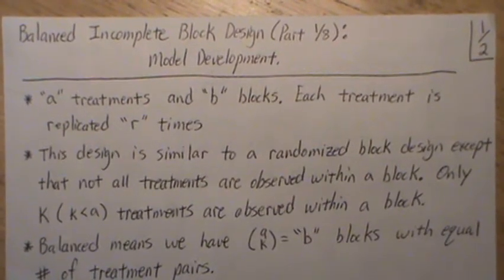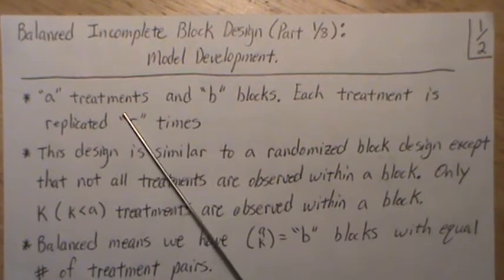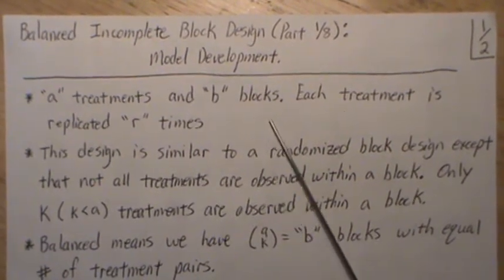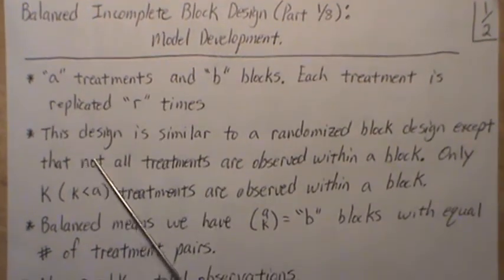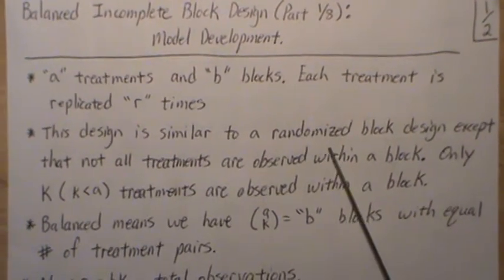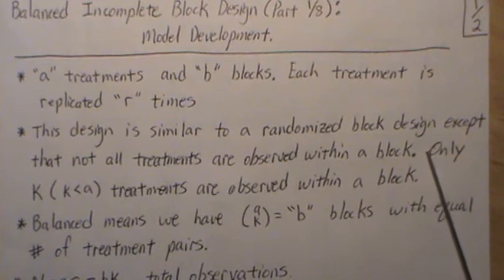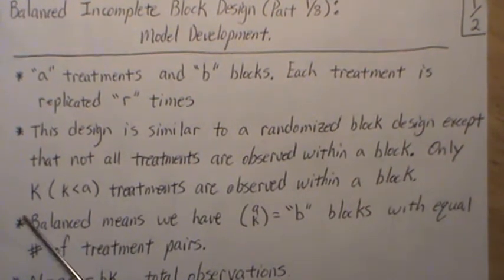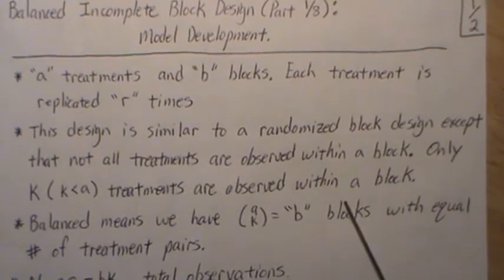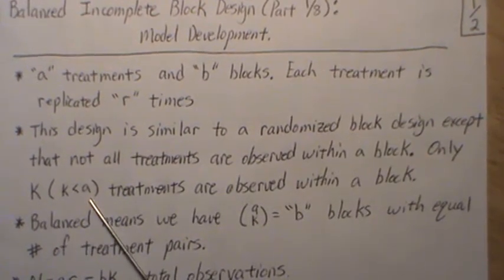In an incomplete block design, there's A treatments and B blocks, and each treatment is replicated R times. This design is similar to a randomized block design except not all treatments are observed within a block. Only K treatments are observed within a block, where K is strictly less than A.